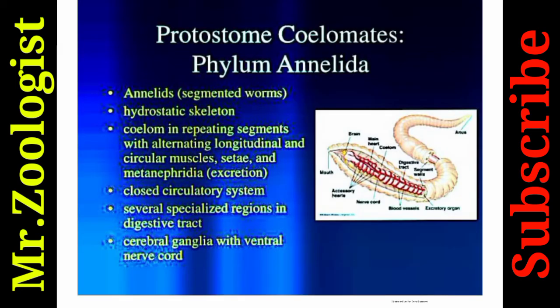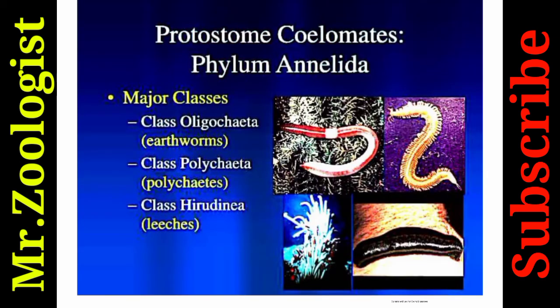Phylum Annelida includes segmented worms. They have a hydrostatic skeleton, a coelom in repeating segments with alternating longitudinal and circular muscles, setae, metanephridia for excretion, a closed circulatory system, several specialized regions in the digestive tract, and cerebral ganglia with a ventral nerve tract — representing the evolution of a brain. Major classes include Oligochaeta (earthworms), Polychaeta, and Hirudinea (leeches).